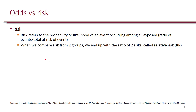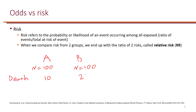Imagine we have two groups, group A and group B, and there are 100 people in each group. Let's say 10 people died in group A and 20 people died in group B. So the risk of death would be 10 out of 100 people in group A, so 10%. And the risk of death in group B would be 20%.